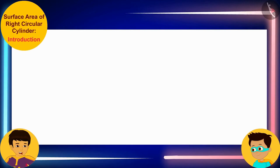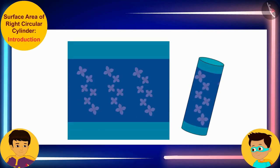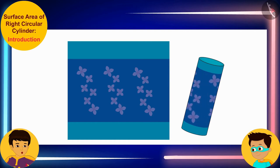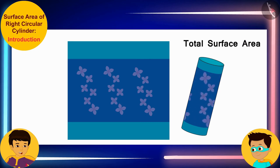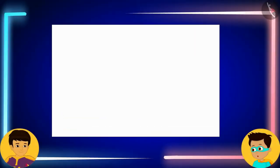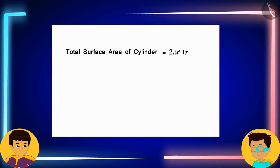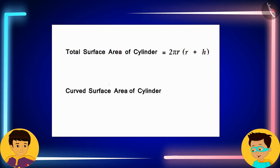Look, Thomas, the paper you use to make cylindrical incense stick packets will be used for all its surfaces. This means that the paper used to make cylindrical packets will be equal to its total surface area. We studied about the surface area of a cylinder last year. The total surface area of a cylinder with radius r and height h can be found by 2πr times the sum of r and h. And to find the curved surface area of a cylinder, we find the product of 2πr and h.